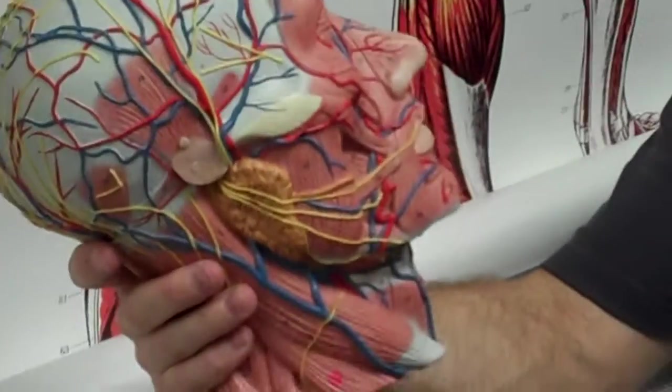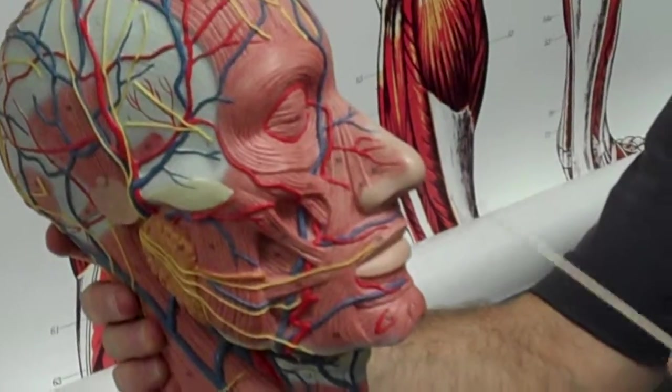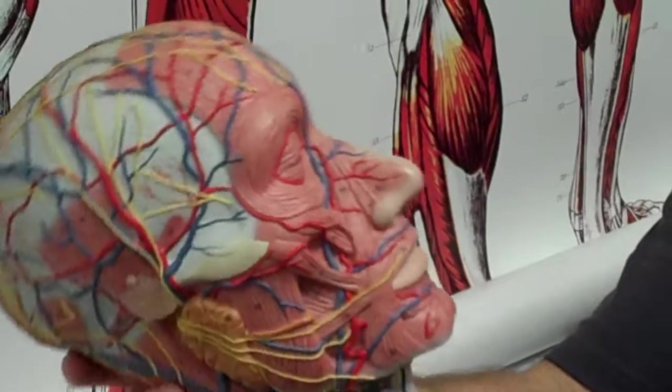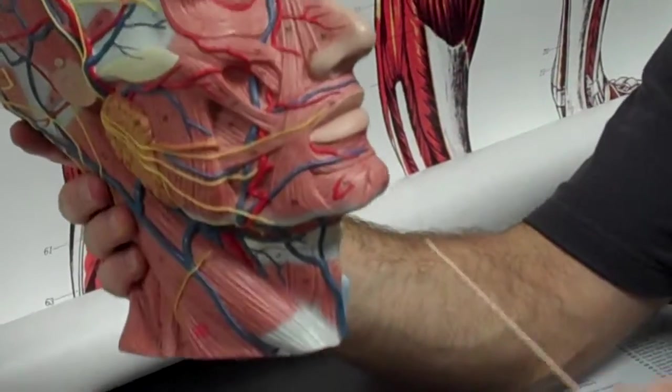And the round one? Orbicularis oris. Oris. Orbicularis oculi. Orbicularis oculi.